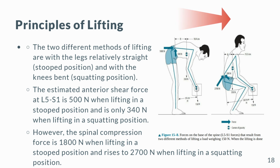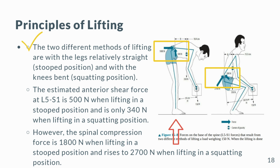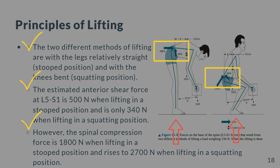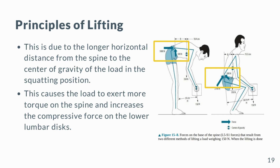Lifting a load of 150 N (approximately 15 kg) can result in different forces on the base of the spine (L5/S1) depending on the lifting method. The two methods are with the legs relatively straight (stooped position) and with the knees bent (squatting position). The estimated anterior shear force at L5/S1 is 500 N when lifting in a stooped position, and only 340 N when lifting in a squatting position. However, the spinal compression force is 1,800 N in the stooped position and rises to 2,700 N in the squatting position, due to the longer horizontal distance from the spine to the center of gravity of the load in the squatting position, which causes more torque on the spine and increases compressive force on the lower lumbar discs.